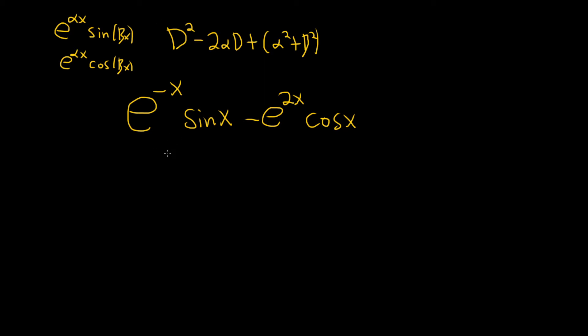Okay, so let's do each one at a time. So for this first one, one at a time, alpha is negative 1. That's what is here. And beta is 1.